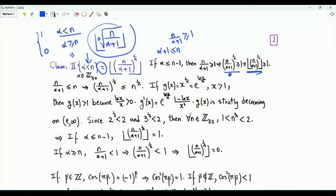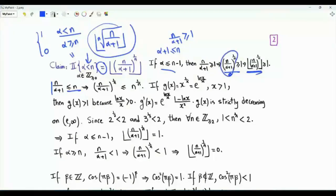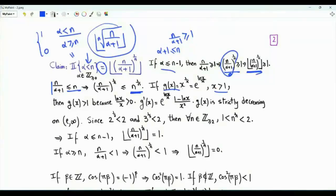But we also need to show that this floor is exactly equal to 1 when α is less than or equal to n minus 1. To prove this, note that n/(α+1) is less than or equal to n, so raising both sides to the power 1/n, this quantity is upper bounded by the nth root of n. If n is 1, this is 1. If n is strictly greater than 1, then this quantity is strictly between 1 and 2. We can show this by defining the function g(x) = x^{1/x} = e^{(ln x)/x} for x greater than 1. If x is greater than 1, ln x is strictly positive, so the power is strictly positive, and g(x) is strictly greater than 1.